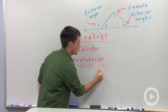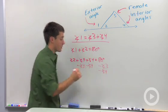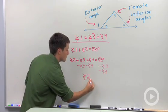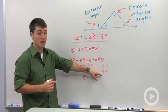So subtract angle three, subtract angle four. And I find that angle two must equal 180 minus those two angles.